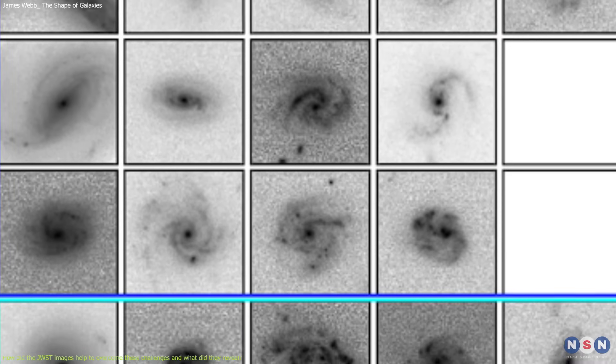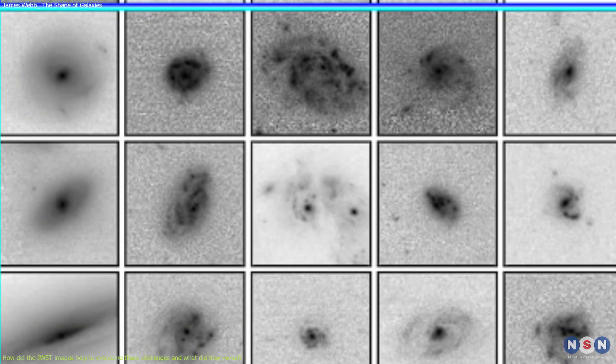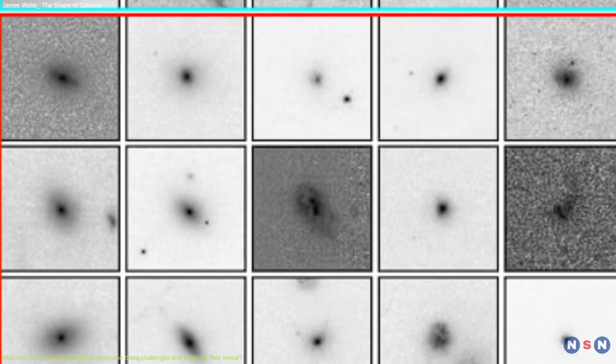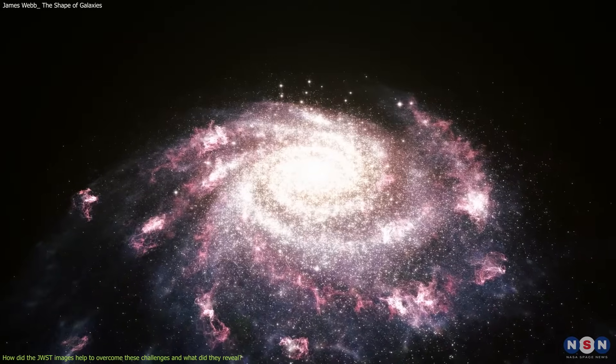The visual classification was done by 5 independent classifiers, who assigned a vote to each galaxy based on their judgment. The votes ranged from 0 to 5, where 0 means no spiral features and 5 means clear spiral features.